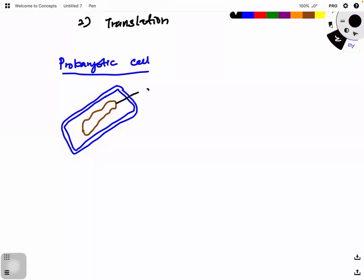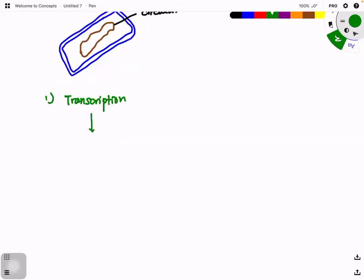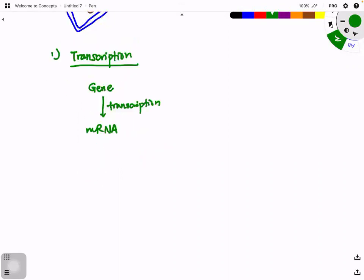What they're going to do here is very simple. For prokaryotic cells, first they carry out transcription. After transcription, from the gene through transcription, they get the mRNA. This mRNA is already mature mRNA, so it can straight away be used for translation.